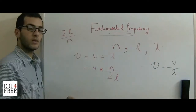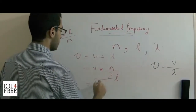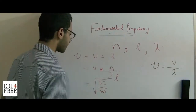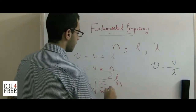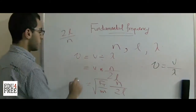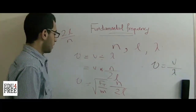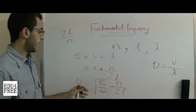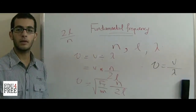From the previous video, we know that the velocity of the standing wave equals the square root of the tension force divided by the linear mass density of the string. Multiplying by N over 2L gives us the fundamental frequency formula. Now we know where the fundamental frequency came from. That's it for today — thank you for watching.